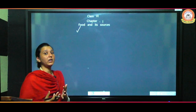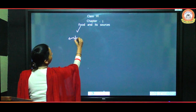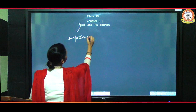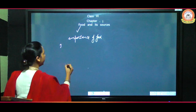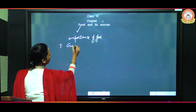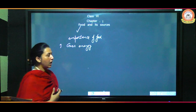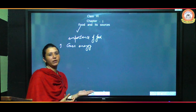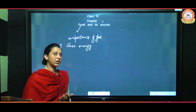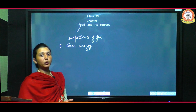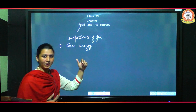Food is a substance that we eat to get energy. So why do we eat food? What is the importance of food? The first reason, as I already mentioned in the definition, is that food gives us energy. For example, I need energy to stand here and explain this topic, and you need energy to study and play. Your parents also need energy to do work at home — and they get that energy by eating food.